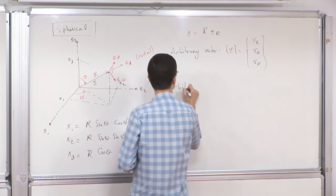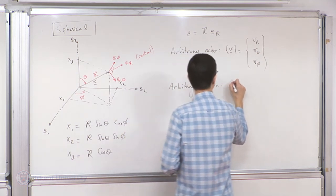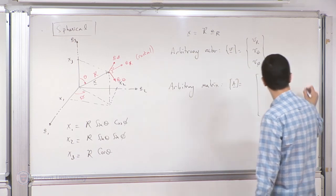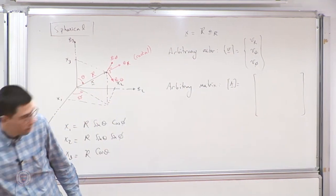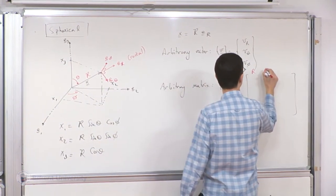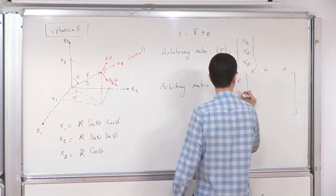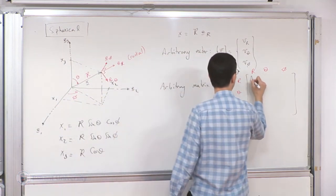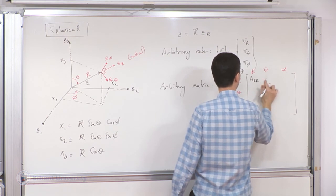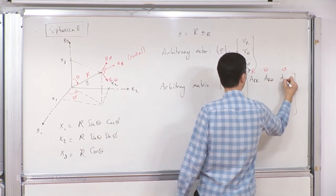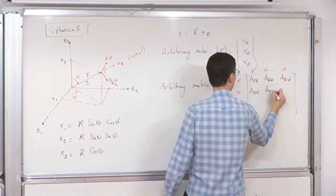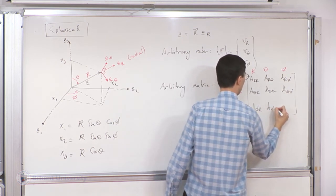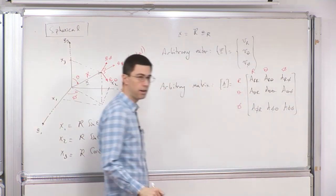I can also obtain the representation for an arbitrary matrix A. You can think of the values r, theta, phi as enumerating components along rows and columns. So this gives ARR, ARθ, ARφ, AθR, Aθθ, AθZ, AφR, Aφθ, and Aφφ as the representation.